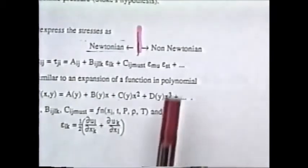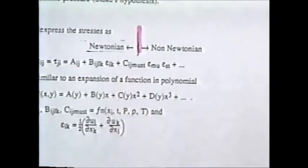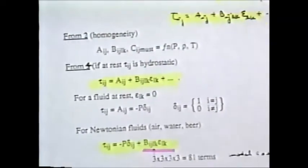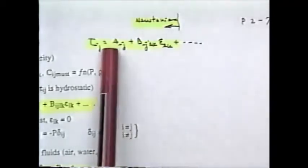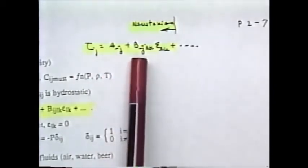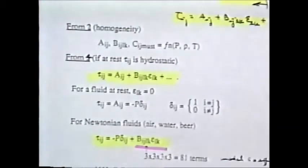Newton makes it simpler: for a Newtonian fluid, stress is only linearly proportional to the velocity gradient, so we discard the second-order and higher terms. We work only with the linear part. So tau_ij = a_ij + b_ijlk·e_lk. The a_ij has no rate of deformation (9 components), and b_ijlk is 81 components, giving 90 total coefficients to start with.